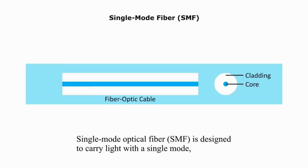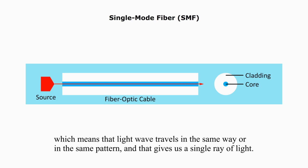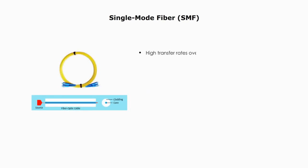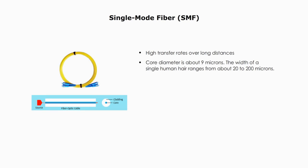Single-mode optical fiber is designed to carry light with a single mode, which means light waves travel in the same way or in the same pattern, and that gives us a single ray of light. Single-mode fiber can offer high transfer rates over long distances. The core diameter is very tiny — it is about 9 microns or micrometers. The width of a single human hair ranges from about 20 to 200 microns or micrometers. Without special equipment, we cannot see the core with the naked eye. Laser-generated light travels over one path, and light does not disperse as the signal travels.